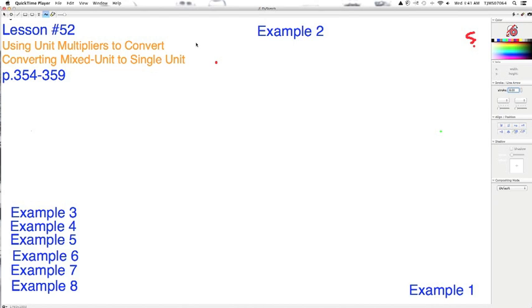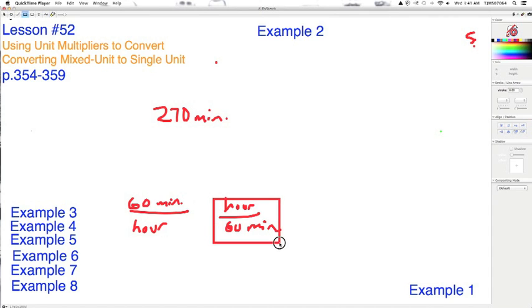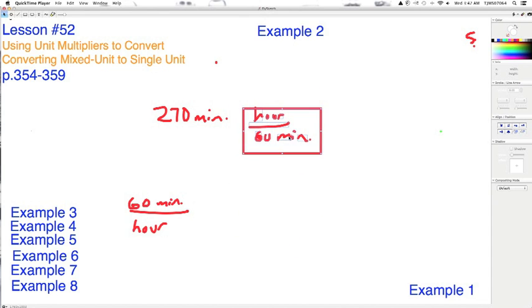Example 2 says a certain double feature at a theater is 270 minutes long. We want to convert that to hours. Easy conversion. We know that there are 60 minutes in an hour. Since we want to cancel this unit out, we're going to go with 1 hour over 60 minutes. And if we bring that up, we can see that if we multiply these together, that this will cancel and we'll be left with hours. So now we just have 270 divided by 60, which is the same as 27 over 6. Goes in there 4 times, 3 left over, 4 and 3 sixths equals 4 and 1 half hours.